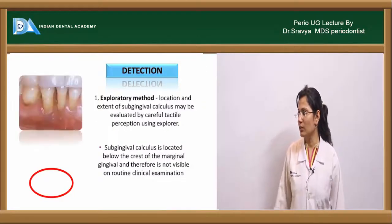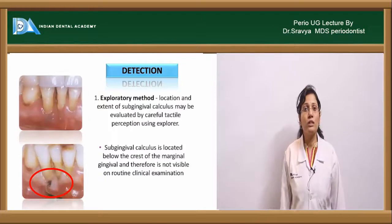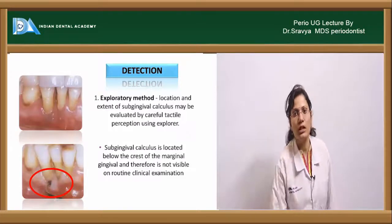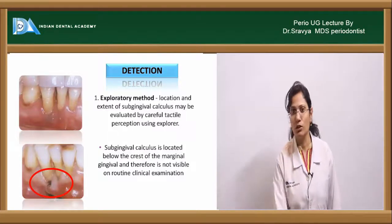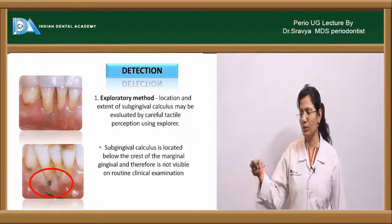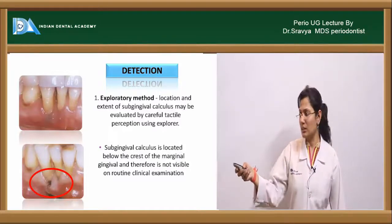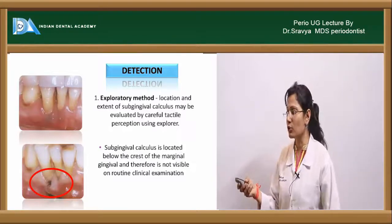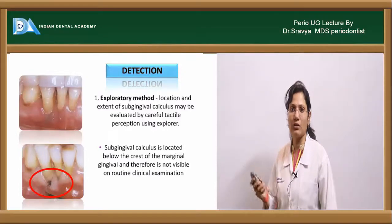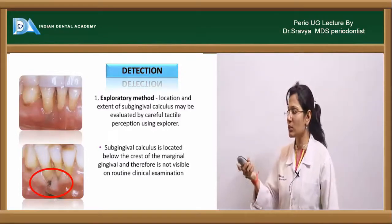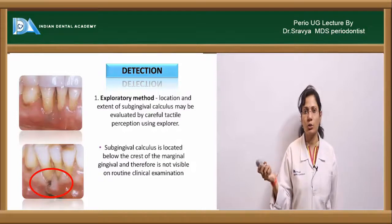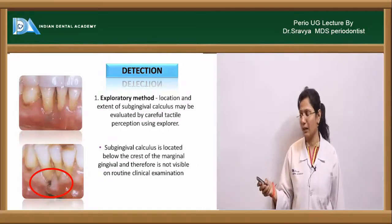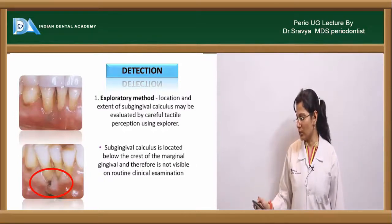Using the exploratory method, a specific explorer called the Sheffield's Hook Explorer (number 23) is inserted to detect calculus by feel. Radiographs can detect calculus since it is a mineralized deposit visible on X-rays, but they are not sensitive enough to determine exact pocket depth, as the apical portion of the periodontal pocket is always unmineralized.